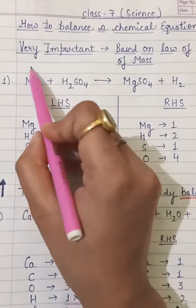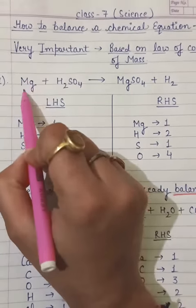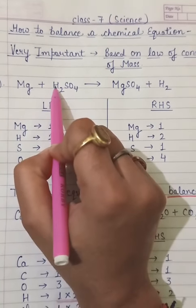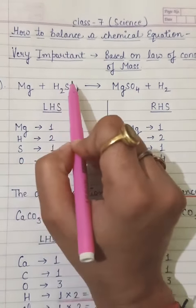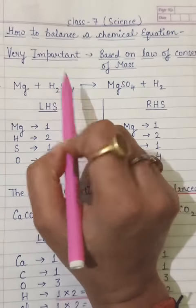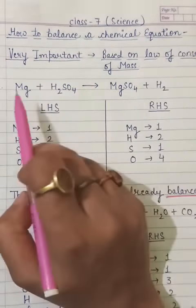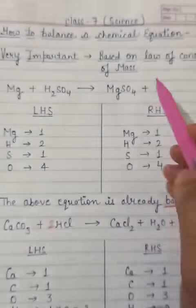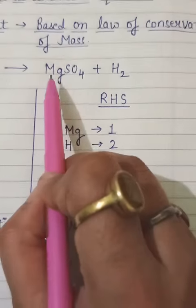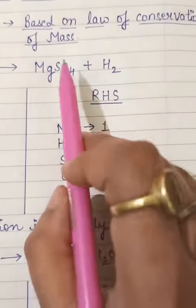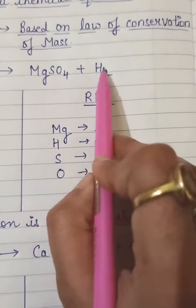First look at the equation. I have written Mg here - magnesium element, then hydrogen H, sulfur S, and oxygen O. The 2 and 4 written here you don't need to look at right now. Just see what is written alphabetically - the elements.